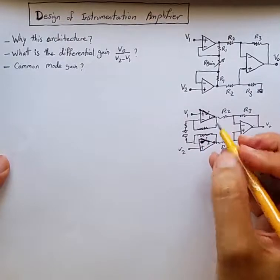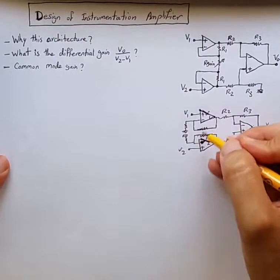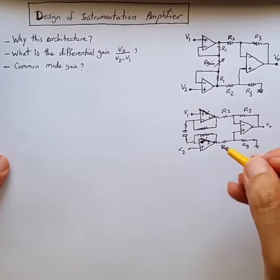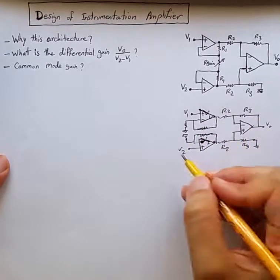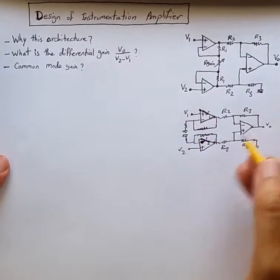But if we do it this way then we have to deal with the mismatches of two sets of resistors. In real life we would like to have a completely symmetric circuit so that both V1 and V2 observe the same thing.